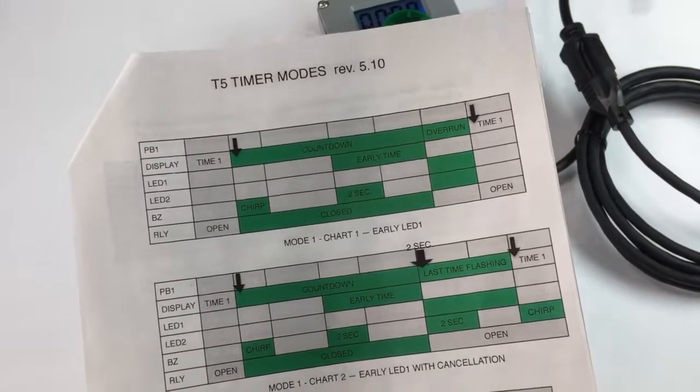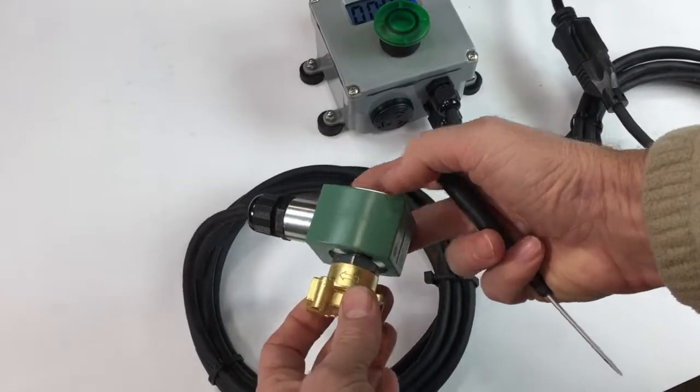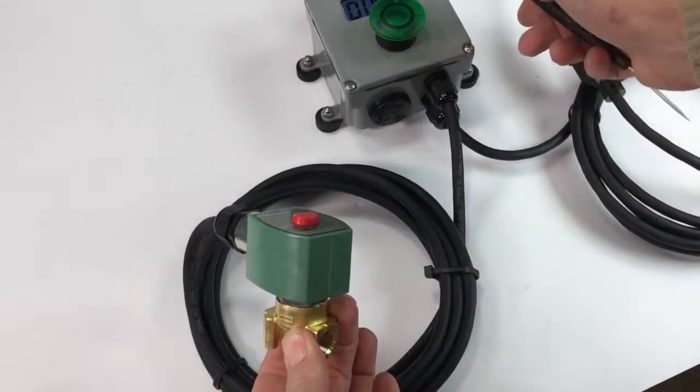Here's where I silence the buzzer. So that's the solenoid valve option with our T5 timer.